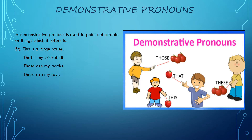Let us see the examples. This is a large house. When I say this is a large house, it means I am pointing out a house. Next: that is my cricket kit. You are pointing out at your cricket kit which is kept far away and saying that that is my cricket kit.